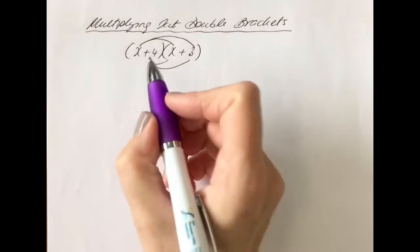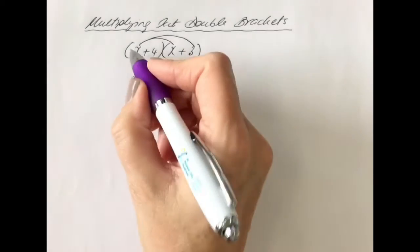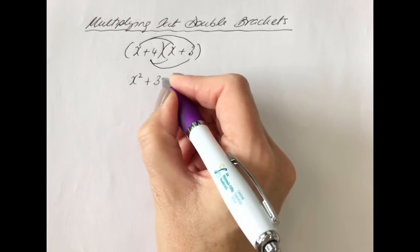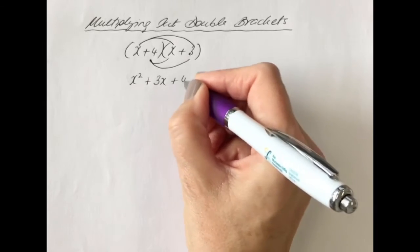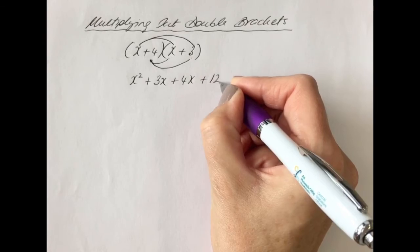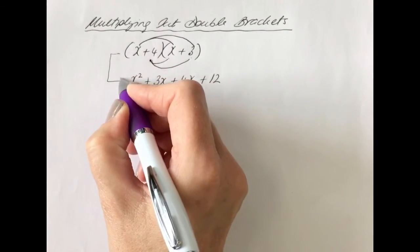When we get x multiplied by x, we get x squared. x multiplied by 3, we get 3x. 4 multiplied by x, we get 4x. And 4 multiplied by 3, we get 12. All multiplication when you're going from that line to that line.